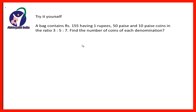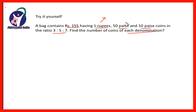Now friends, this one is for you: a bag contains rupees 155, having 1 rupee, 50 paise and 10 paise coins in the ratio 3:5:7. Find the number of coins in each denomination — that means find how many 1-rupee coins, 50-paise coins and 10-paise coins there are. Friends, you try it yourself.